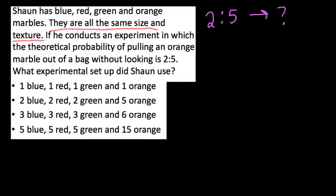What I'm going to do is take each of these scenarios they give us, write them as ratios, and look for connections here. Okay, so let's go. In the first one, we have one blue, one red, one green, and one orange. So what does that mean? The ratio of orange to total is 1 to 4. So it's 1 to 4.